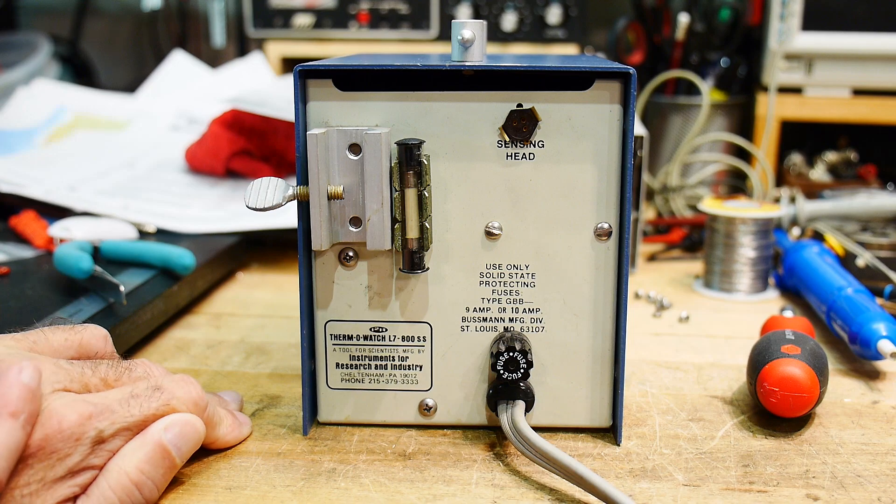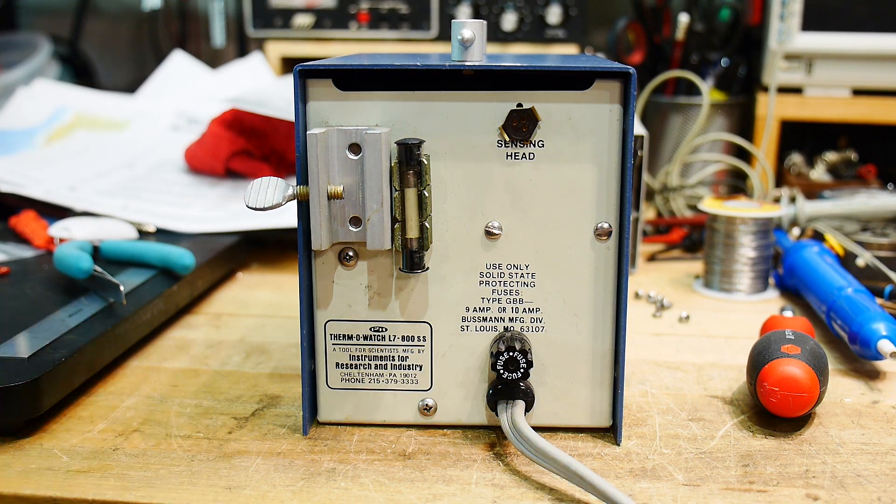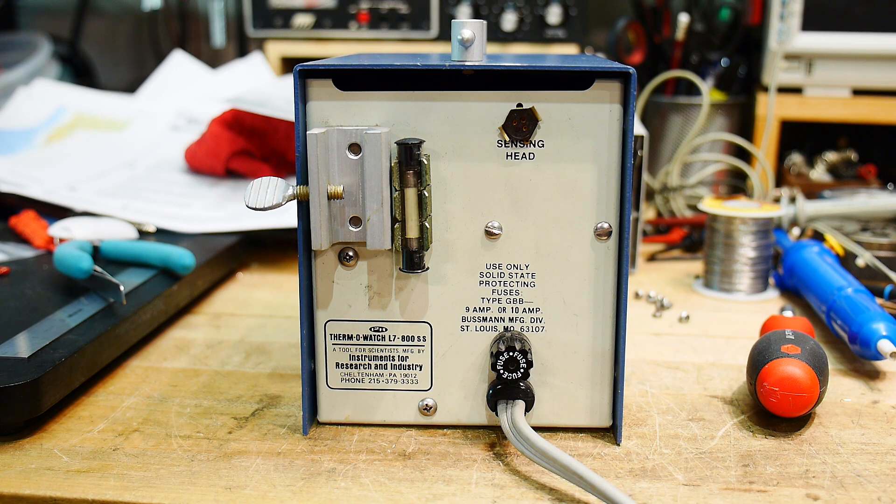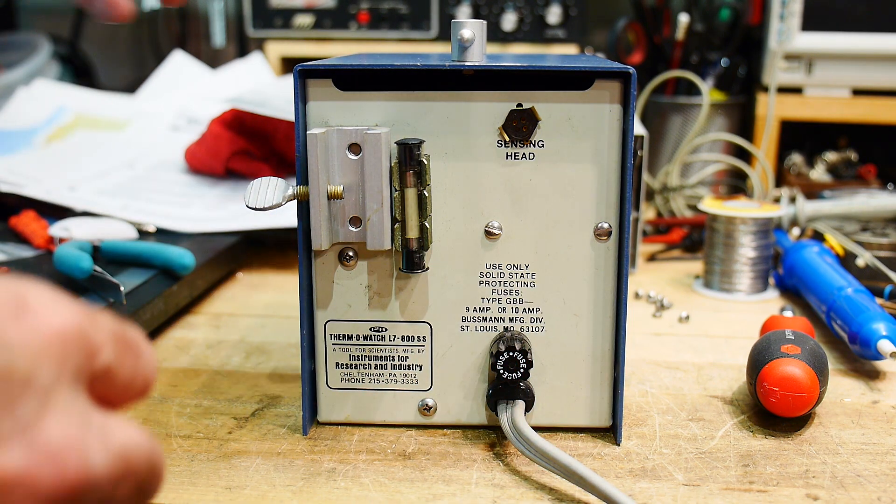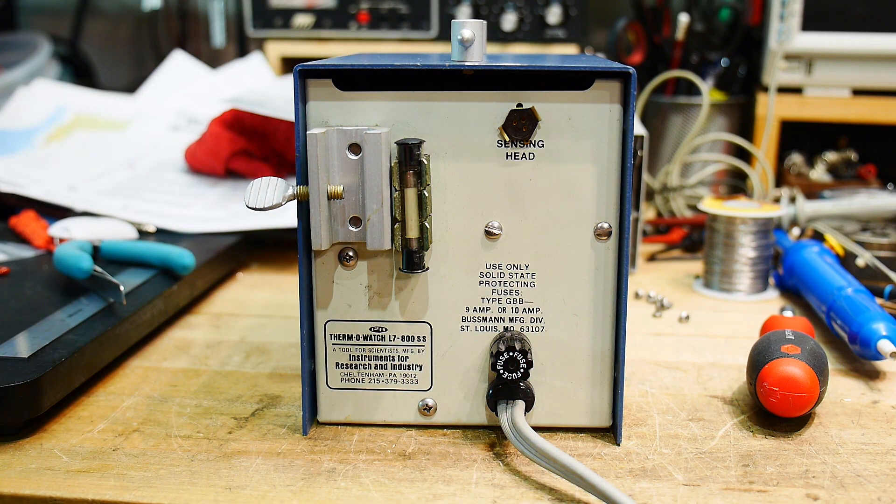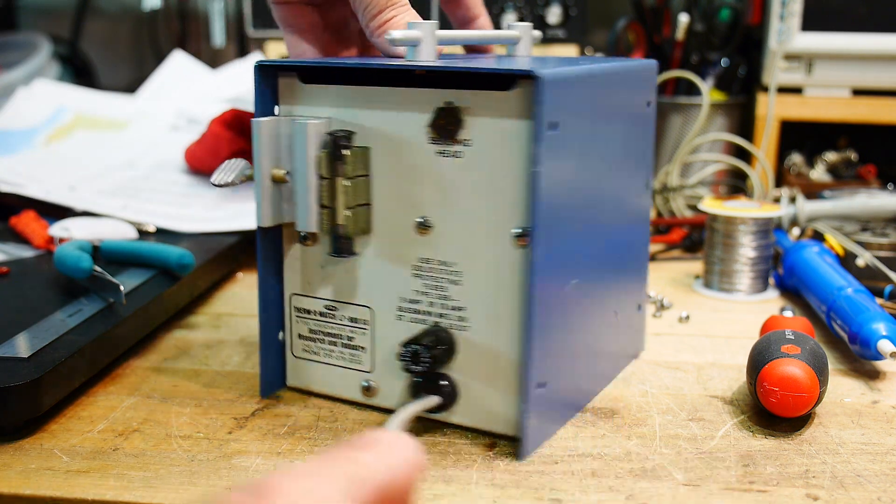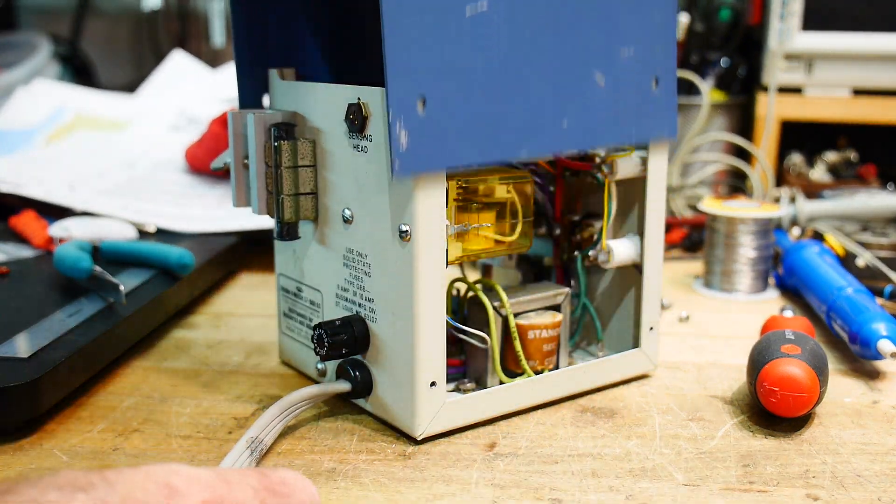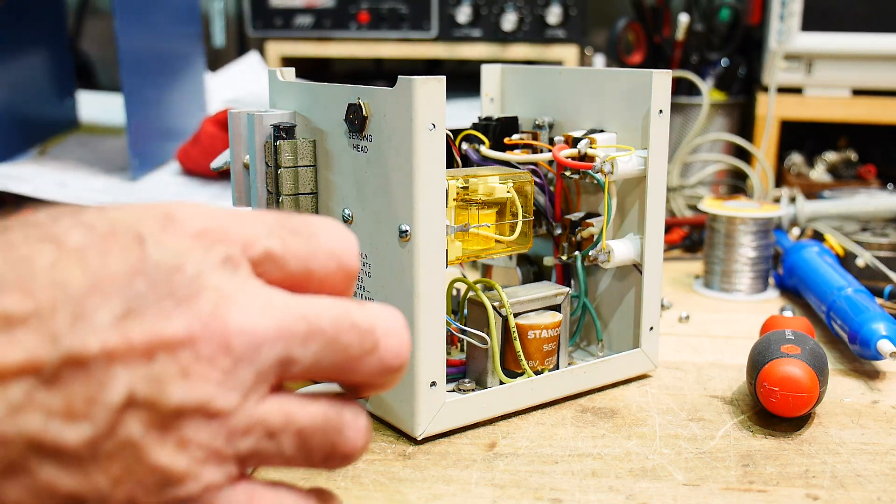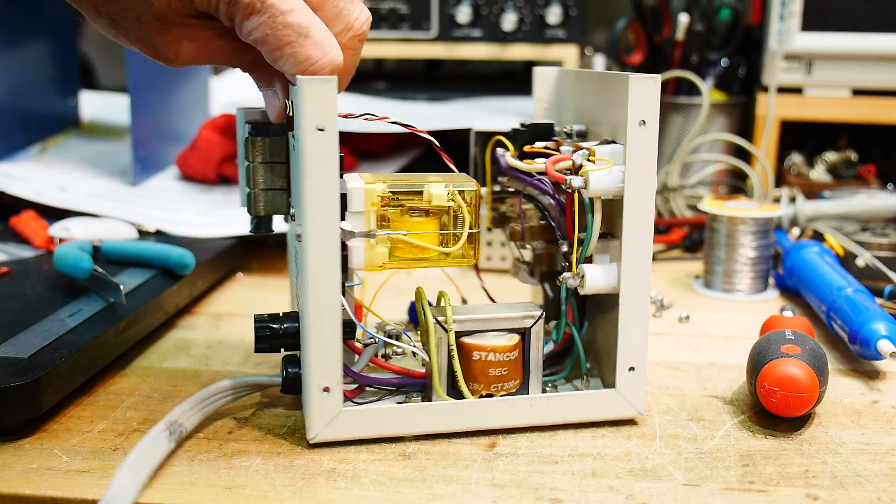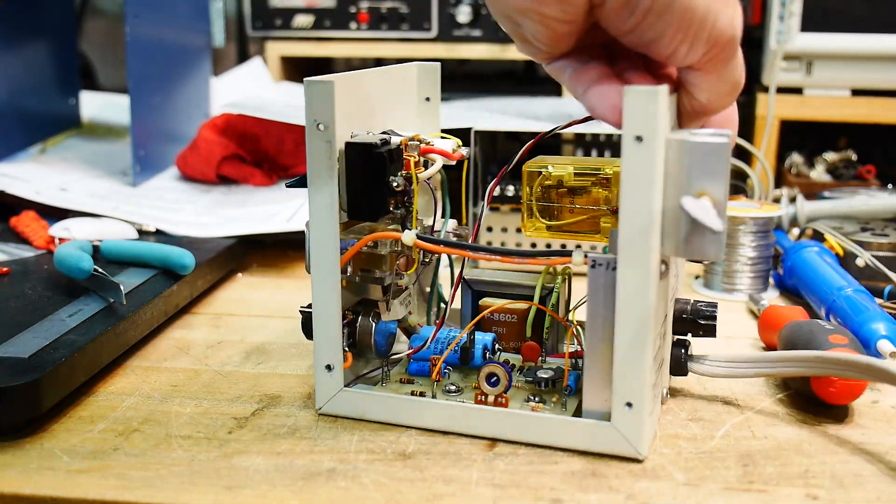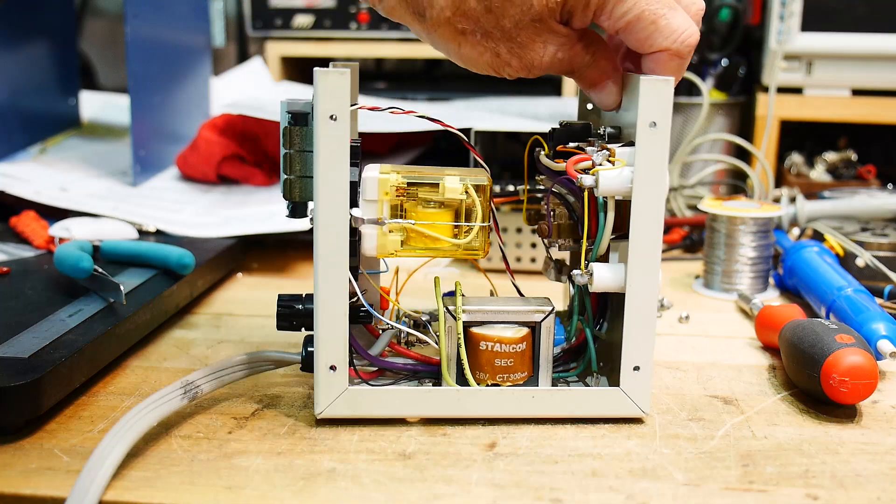And then it's got a thing called a sensing head. So I'm thinking maybe that's the thermocouple that goes off somewhere. So maybe it's just like a thermometer, I mean a thermostat, right? Just an industrial thermostat. So anyway, I took the screws out of it and we can take a peek inside. Take the top off. And got a bunch of stuff on it.